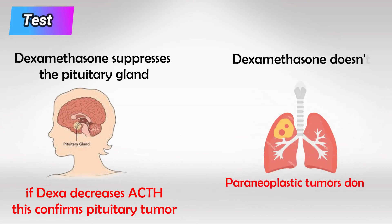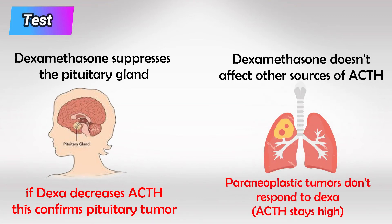If low dose dexamethasone fails to suppress ACTH, this indicates that the source of ACTH is outside the pituitary gland, like a paraneoplastic tumor in the lungs, for example.